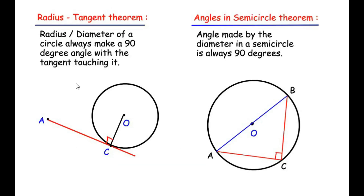We are going to make use of three theorems, starting with the radius-tangent theorem. It states that the radius or diameter of a circle always makes a 90 degree angle with the tangent touching it. Here, AC is a tangent to the circle touching it at point C, and OC is the radius. So according to the theorem, the radius always makes a 90 degree angle with the tangent.